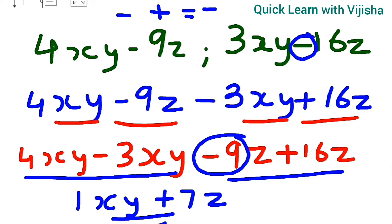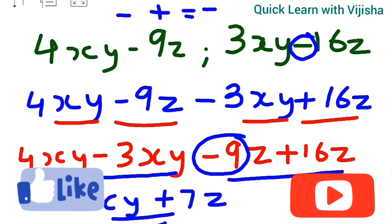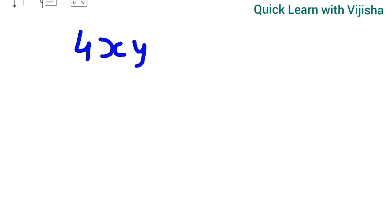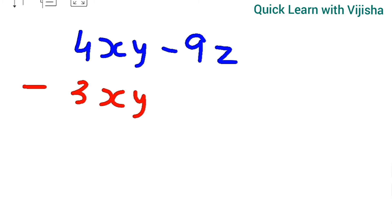That was the horizontal method. Now let's see the vertical method for the same question. In vertical method, we write the expressions in a standing position. So we write 4xy minus 9z, put a subtraction sign, and the next term is 3xy minus 16z written below it.